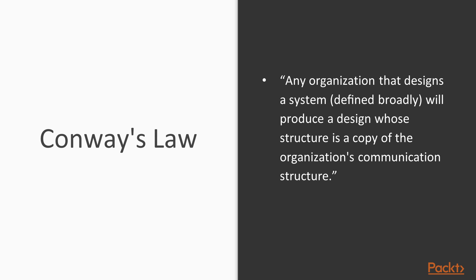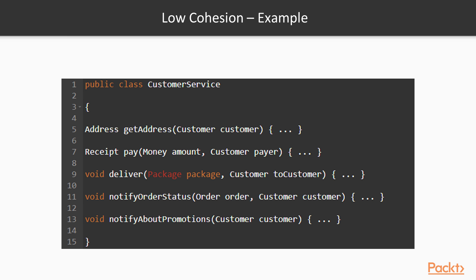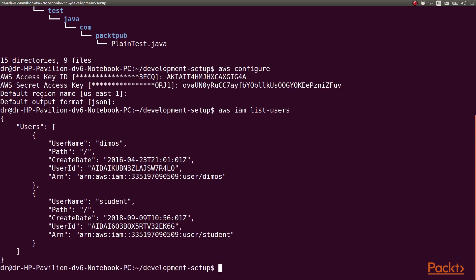We'll also study Conway's law and its relation to the microservices architecture. We'll define the terms of coupling and cohesion, which are crucial for building software that is maintainable. We'll refer to these terms in the rest of the course when explaining why we make certain decisions. We'll also introduce the concept of domain-driven design and explain how it can help us build better software.